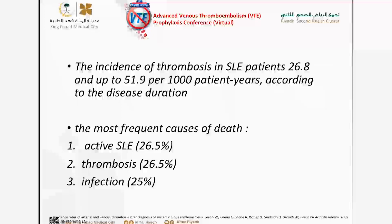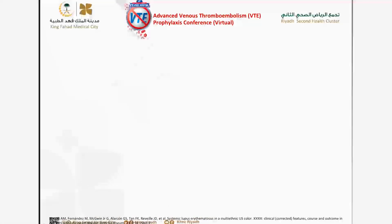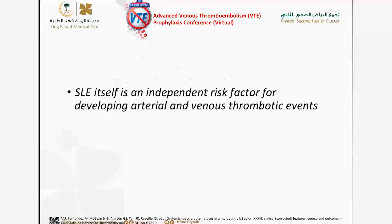We have to know that the most common causes of death in lupus patients are either active disease or thrombosis — with equal percentage at 26.5% — and then infection at 25%. It depends on timing: in the first 10 years, mortality is more toward active disease; in the later years, more toward thrombosis. However, thrombosis is one of the major causes of death in our patients.